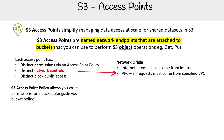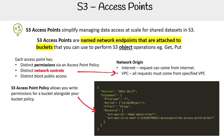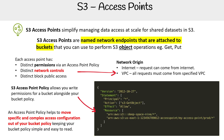S3 access point policies allow you to write permissions for a bucket alongside your bucket policy. And if you're thinking that looks a lot like a bucket policy, it basically is. The whole point of access points is to simplify the complexity of your bucket policy by moving a lot of the specific rules out into these access points, so that you don't have to manage a giant bucket policy — you have these specific overrides instead.